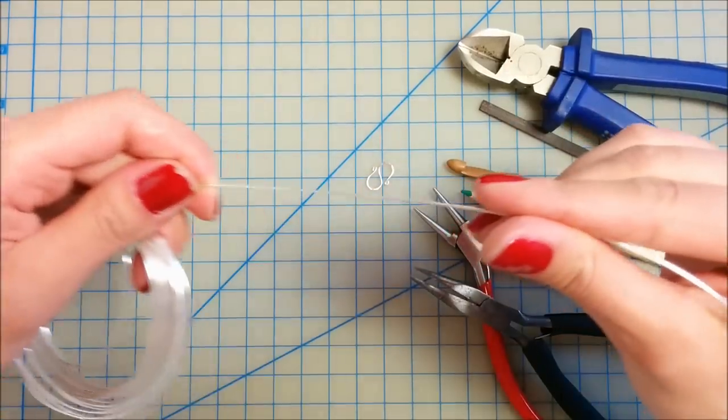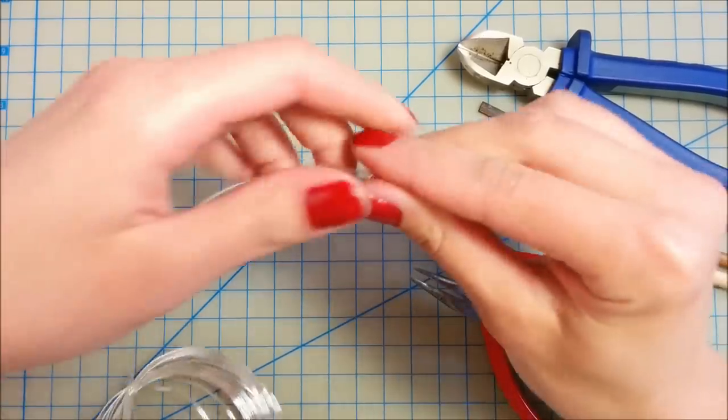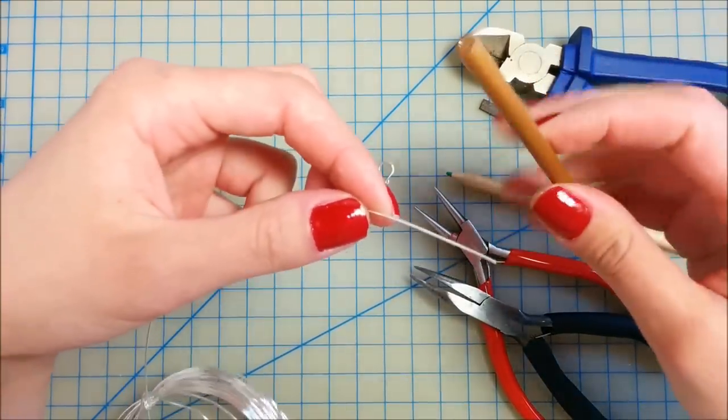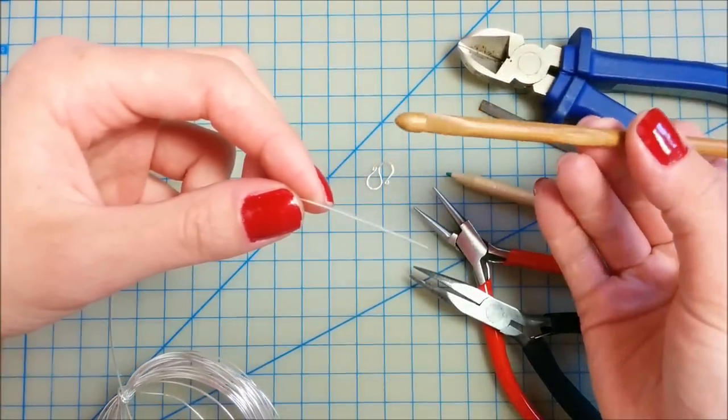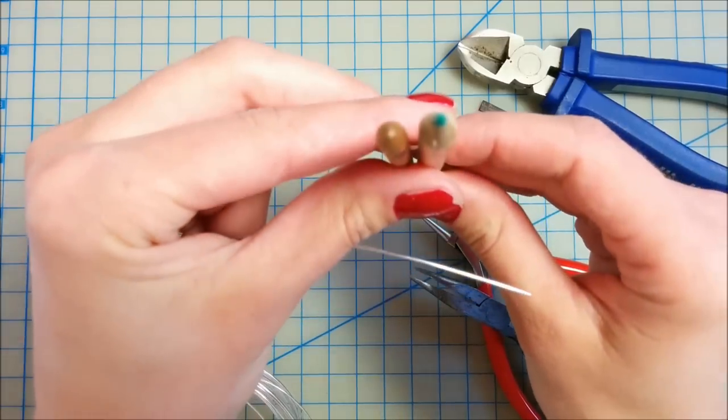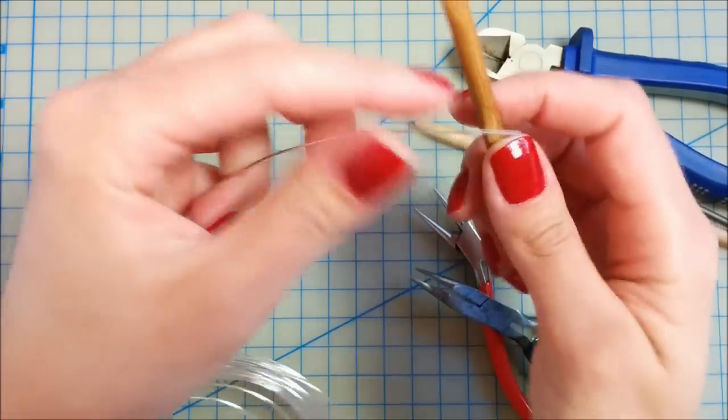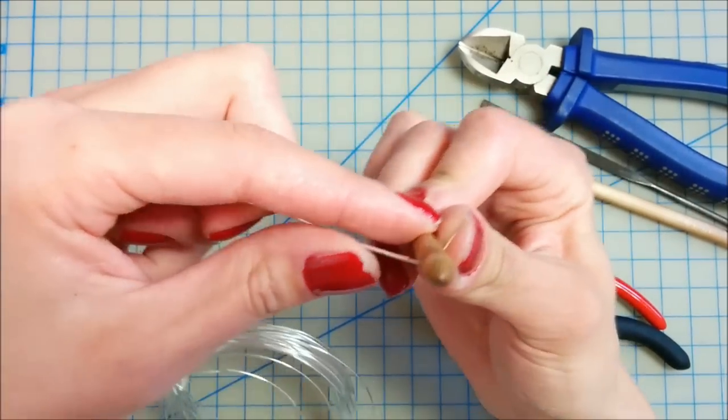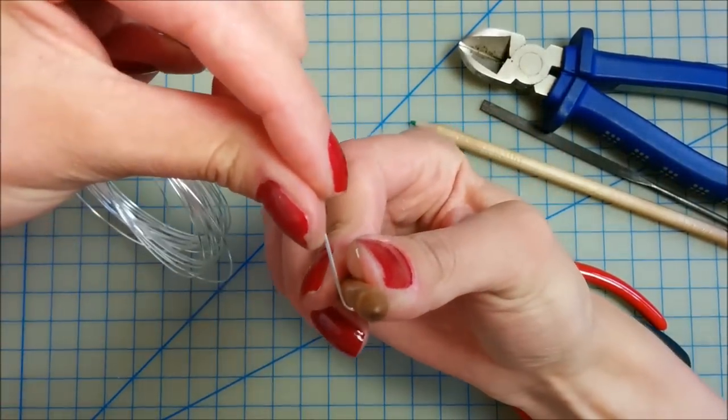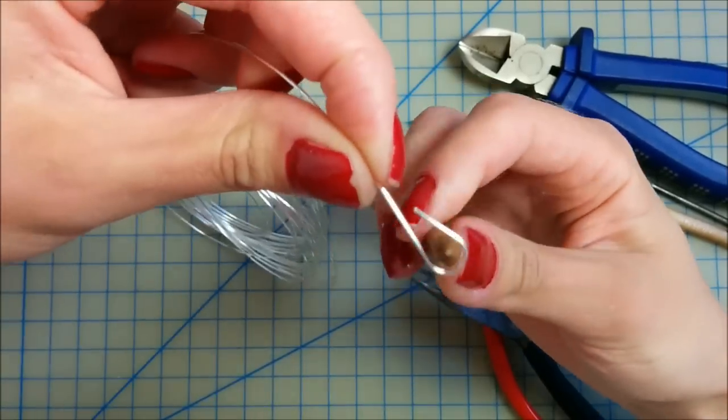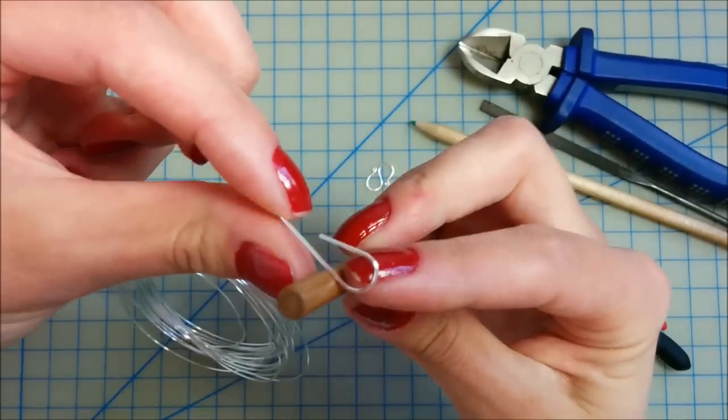Take a piece of wire and using a pencil or a crochet hook, make an S shape. I'll use a crochet hook, it's a little bit thinner than the pencil. So wrap it around the crochet hook or your pencil and make an S shape.